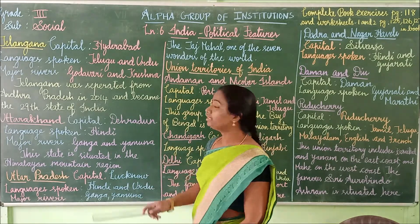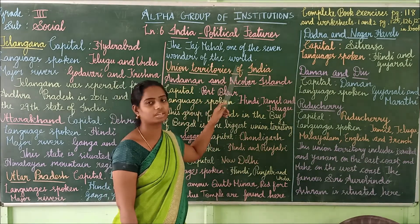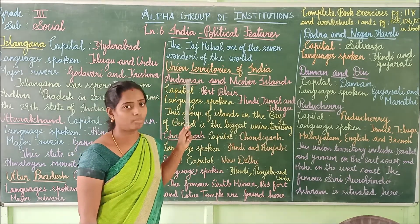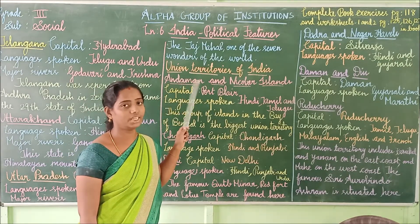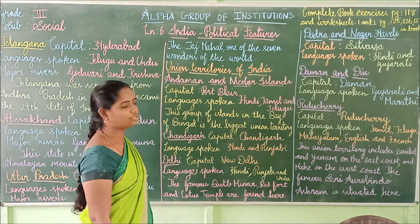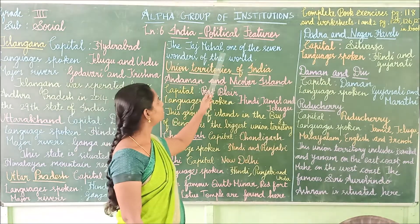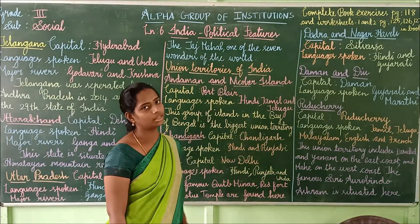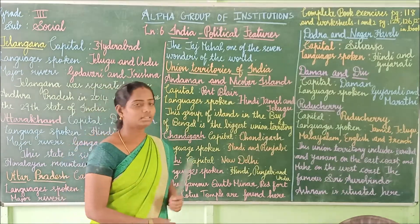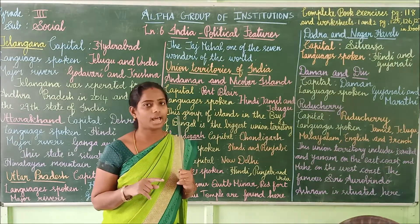The Taj Mahal, one of the seven wonders of the world, is situated in Uttar Pradesh. These are all the states of India we have discussed, and one more state is West Bengal.